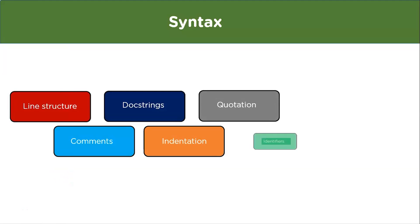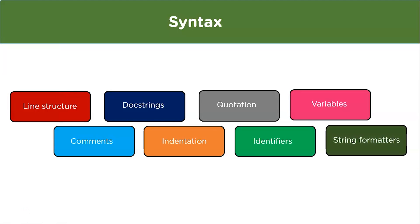Now let's look at the syntax of Python. First is line structure — a program in Python is divided into logical lines, each ending with a newline token. A logical line is created from one or more physical lines, and a physical line is a set of characters. A new line depicts a new statement, but statements can be split using a backslash or triple quotes around the string.